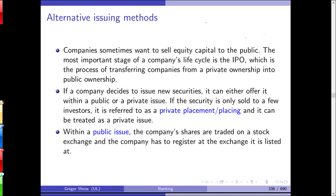It's important to distinguish between two types of equity sales. The first is an IPO — an initial public offering, or a so-called unseasoned equity offering — meaning this is the very first time a company goes public and investors can buy shares for the very first time. In addition, we have seasoned offerings, where the company decides to increase its equity capital basis and sells additional shares beyond those already issued in the IPO.